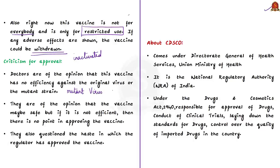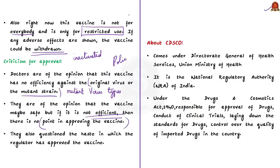Scientifically, Covaxin offers much better antigen presentation and a consequent immune response than a vaccine developed from a specific part of the viral protein, making it potentially more effective against mutant strains — the same approach was historically observed for poliovirus. Covaxin will be used as a backup vaccine, to be used only if it was not clear how efficacious the Covishield vaccine would be. However, opposition has come from various quarters — many doctors opine that the vaccine has no proven efficacy against the original virus or the mutant strain, and some say that if the vaccine doesn't prove efficient, there is no point in approving it. There were also questions about the hasty manner in which the regulator approved the vaccines.